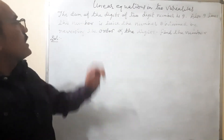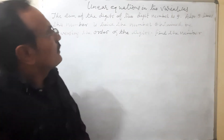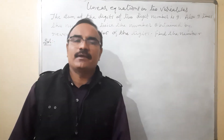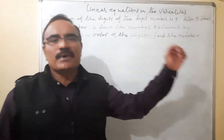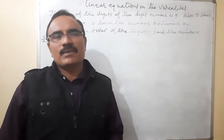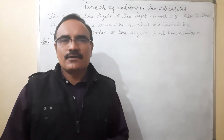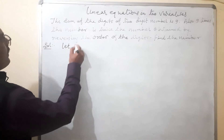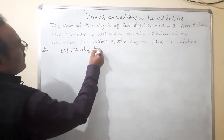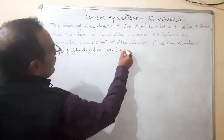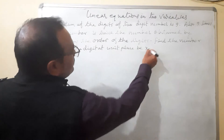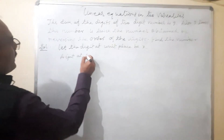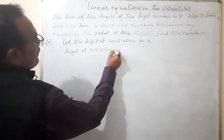Next problem: the sum of the digits of a two-digit number is 9. Also, 9 times the number is twice the number obtained by reversing the order of digits. Find the number. For finding the number we need the digits, so we consider: let the digit at the unit place be x and the digit at the tens place be y.